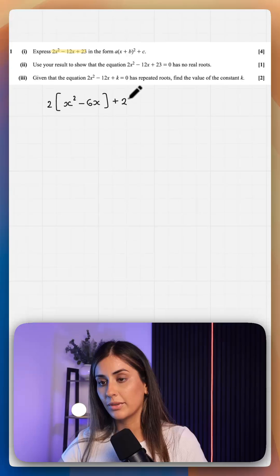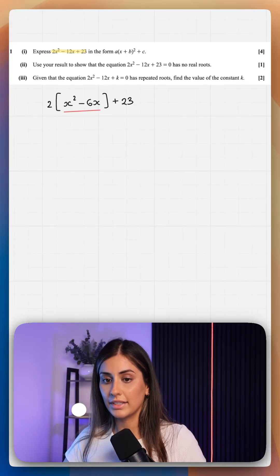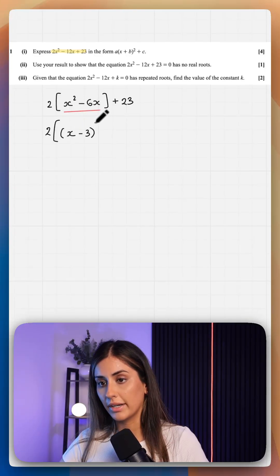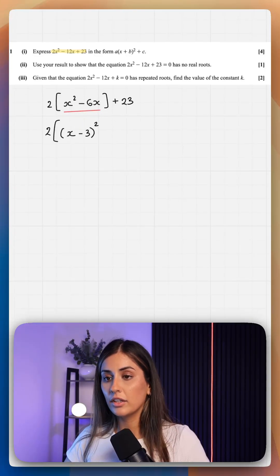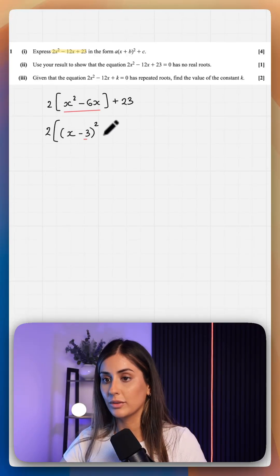We're going to leave the 23 on the outside, and then we want to complete the square on this part here, so keep your square brackets in. What you do is half the coefficient of x, close the bracket and add a square on the outside, and then you are going to square this term and subtract it regardless if it's positive or negative.